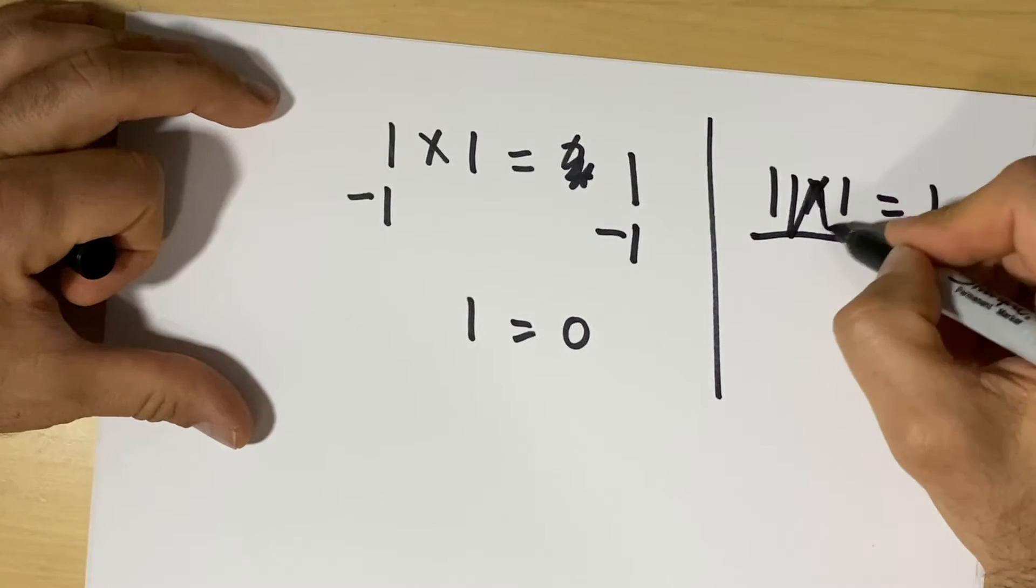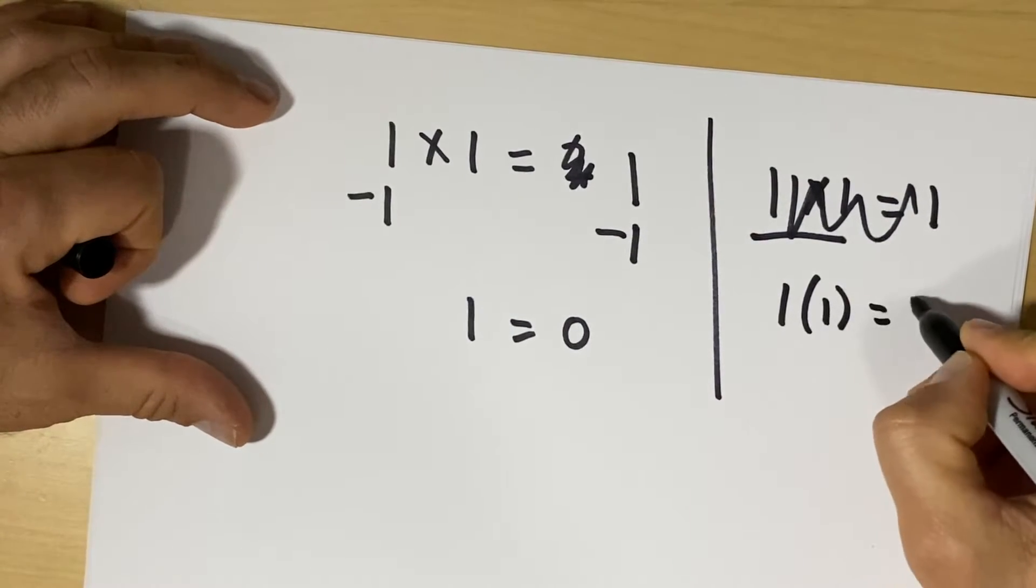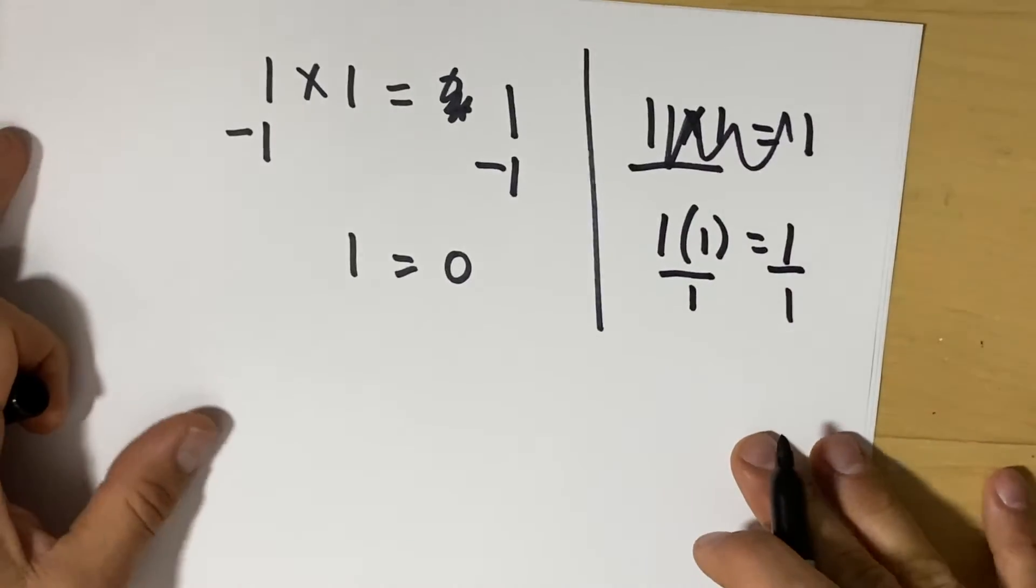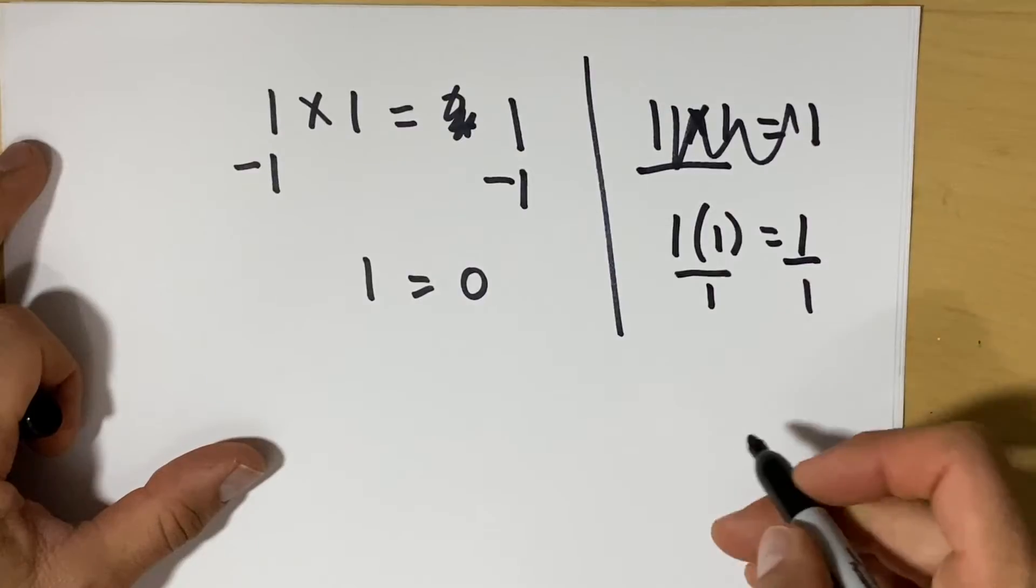Let's write it more appropriately. 1 times 1 equals 1. You would divide, which is the inverse of multiplication, the opposite of multiplication.